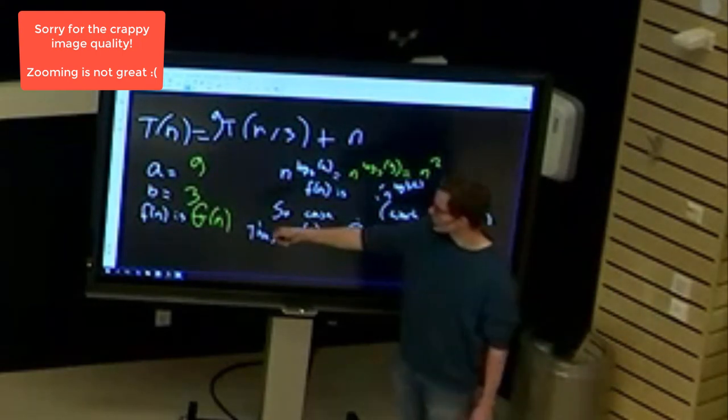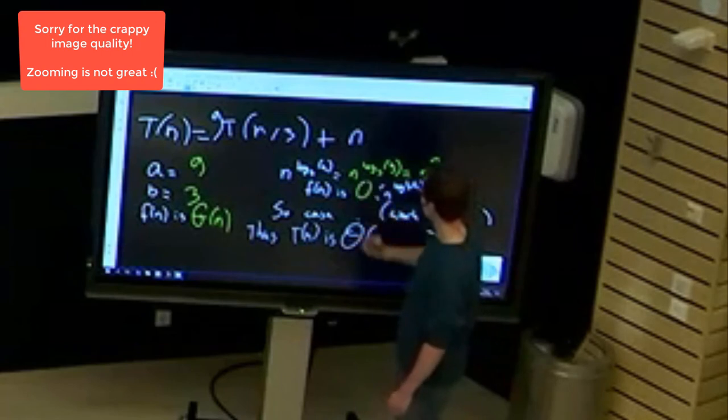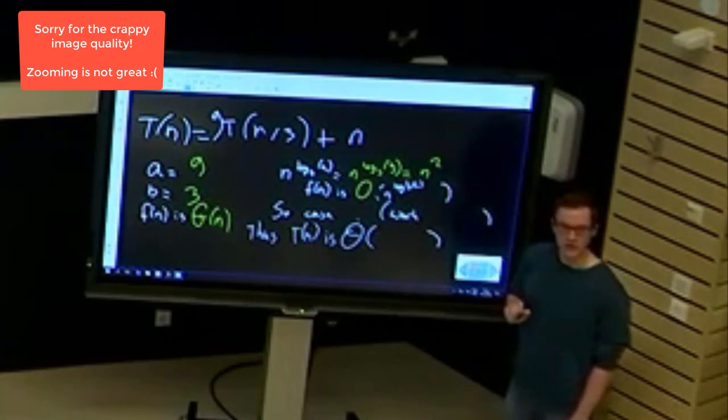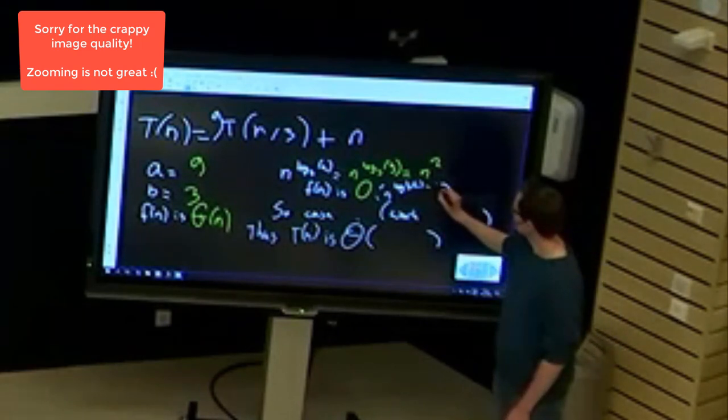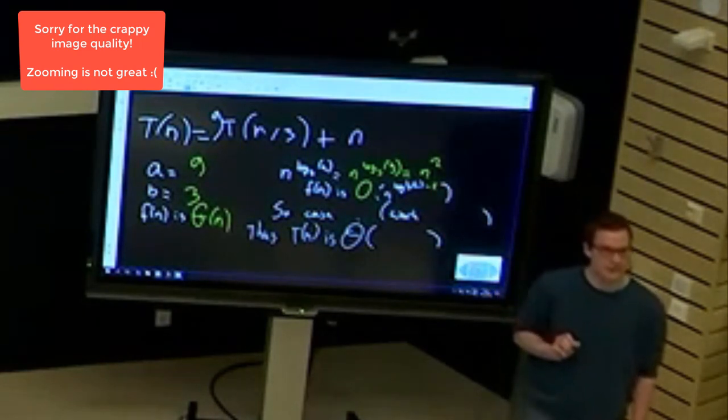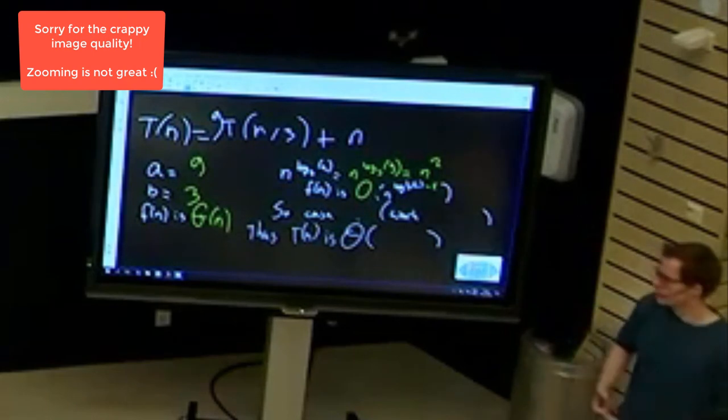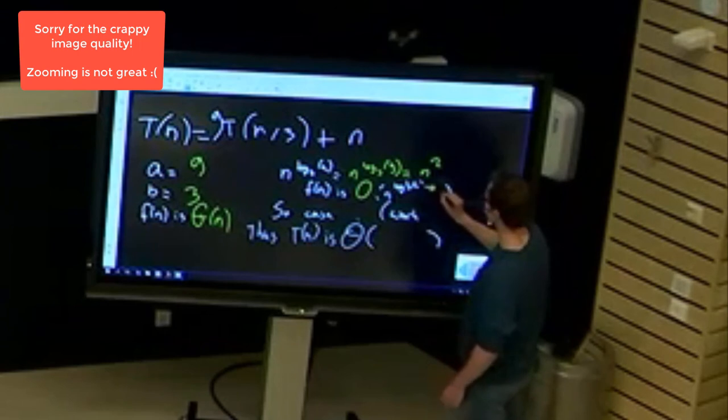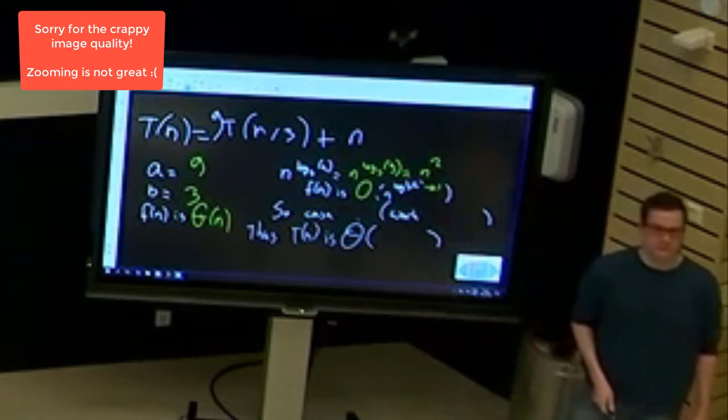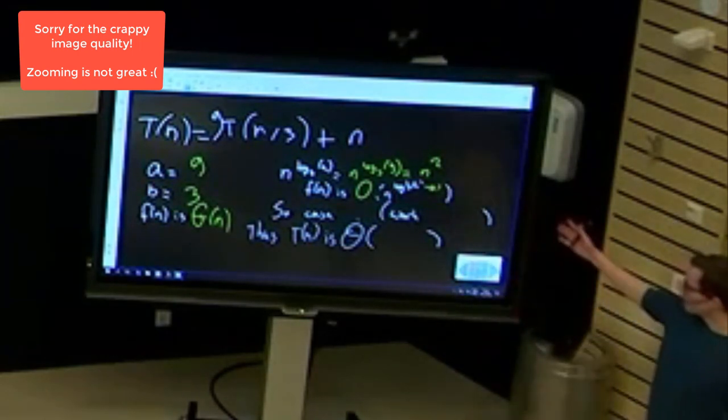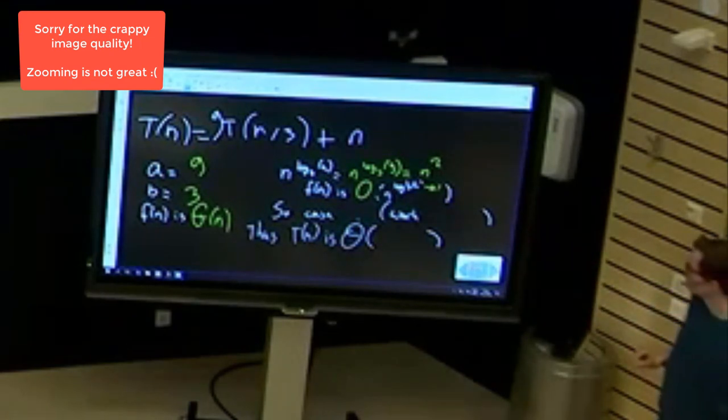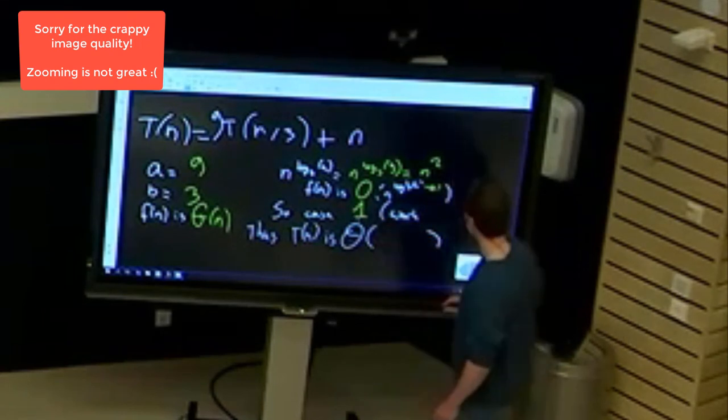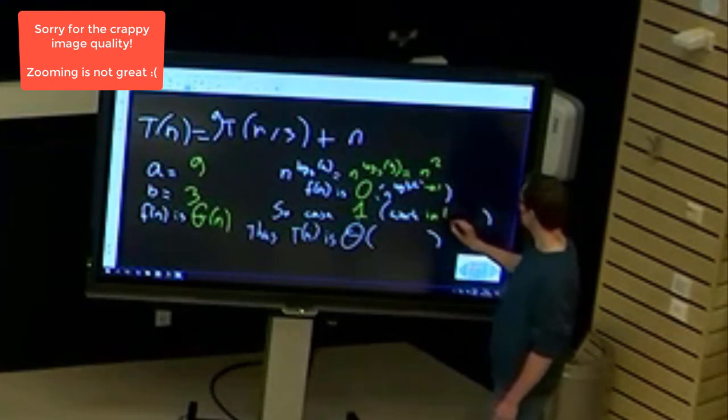So f(n), which is only theta n, is upper bound by n to the power log_b of a minus some epsilon. Right, it had to be strictly smaller. Well, take for instance minus 0.1, I don't care. Right, then it's 1.9, that's still way higher than just one. Okay, if it was upper bound, then indeed it was case one where the most work happens in the leaves.